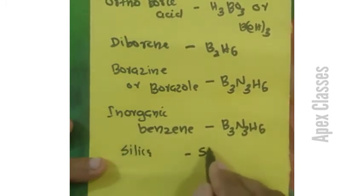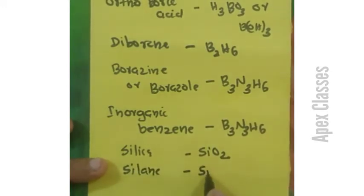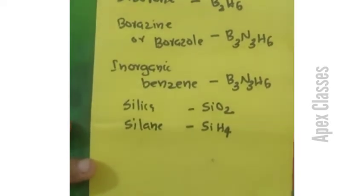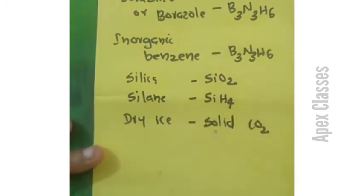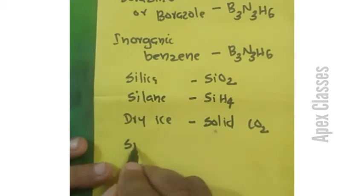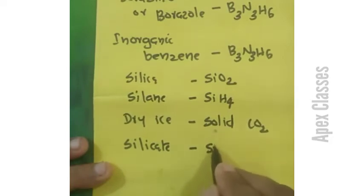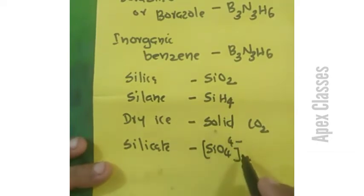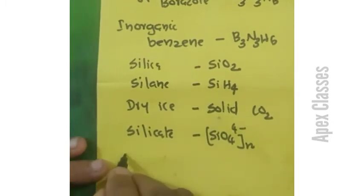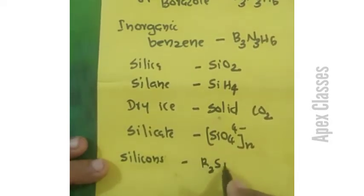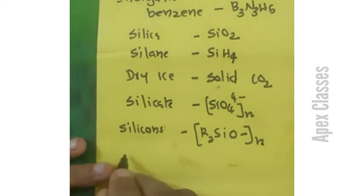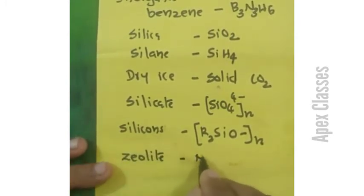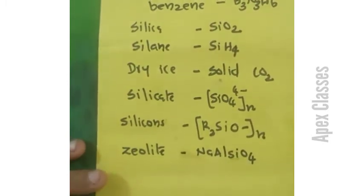Silica is SiO2. Silane is SiH4. Dry Ice is solid carbon dioxide. Silicates are compounds containing SiO4(4-) repeating units, forming polymers. Silicones are polymeric units containing R2SiO repeating units, where R is an alkyl group. Zeolite is NaAlSiO4.